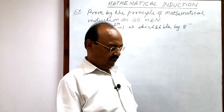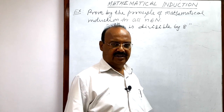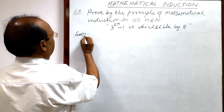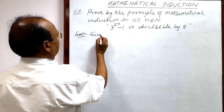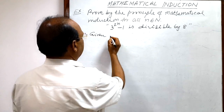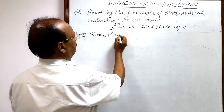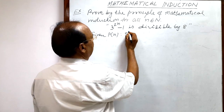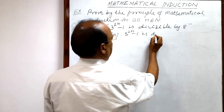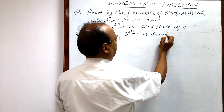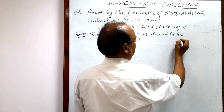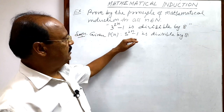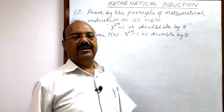We can solve this question very interestingly. Let us see the solution. This is the given mathematical statement, and you know mathematical statement is denoted by P(n). So here P(n) is: 3 to the power 2n minus 1 is divisible by 8. We have to establish it, we have to prove it, and we will do it by the principle of mathematical induction.